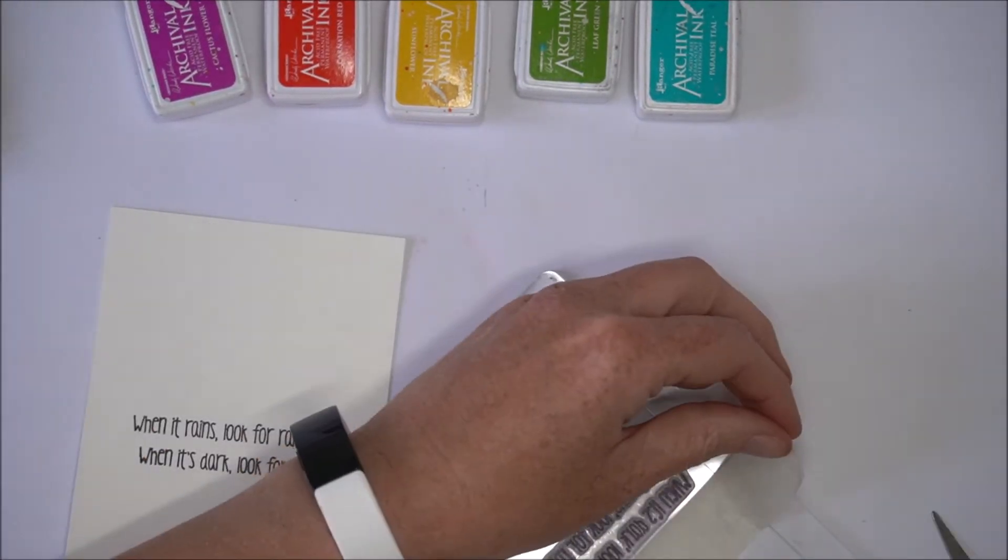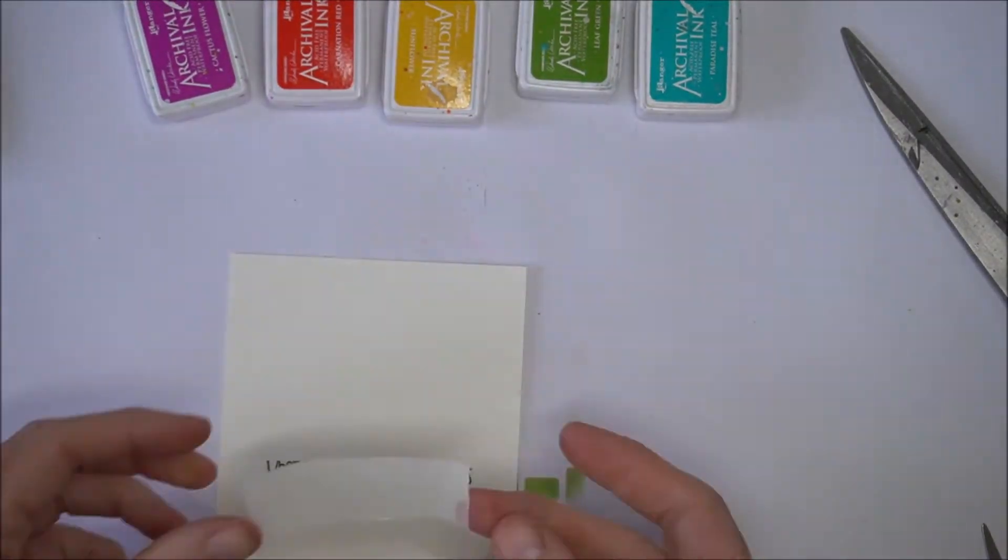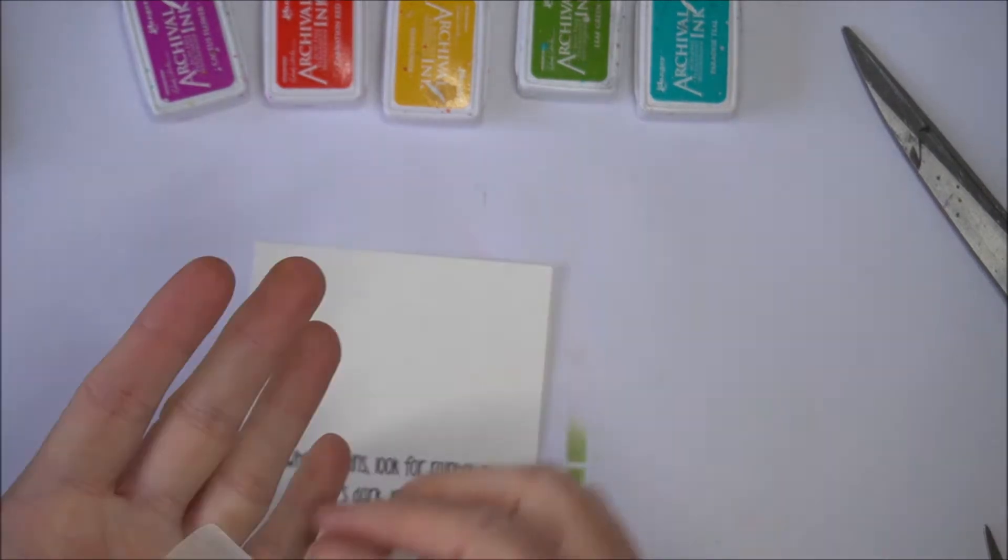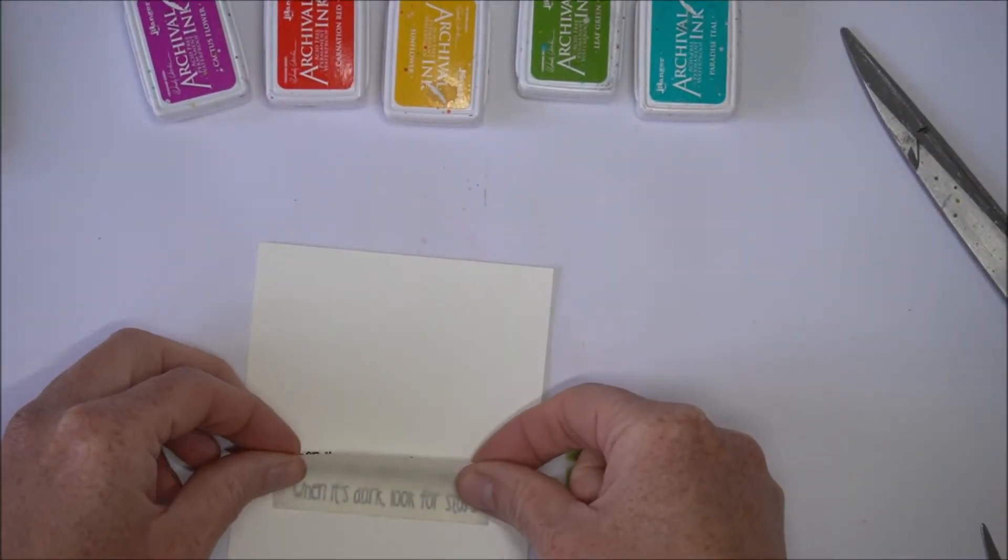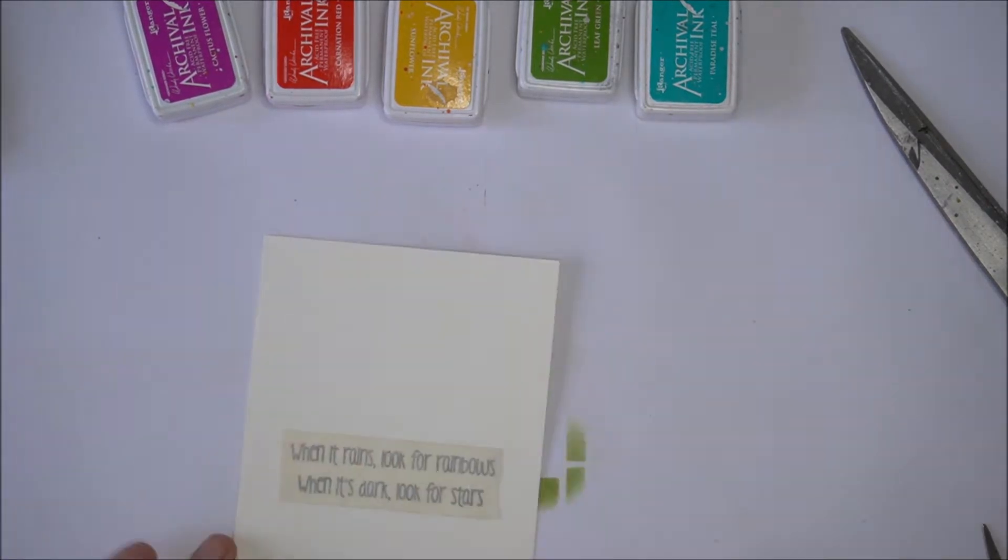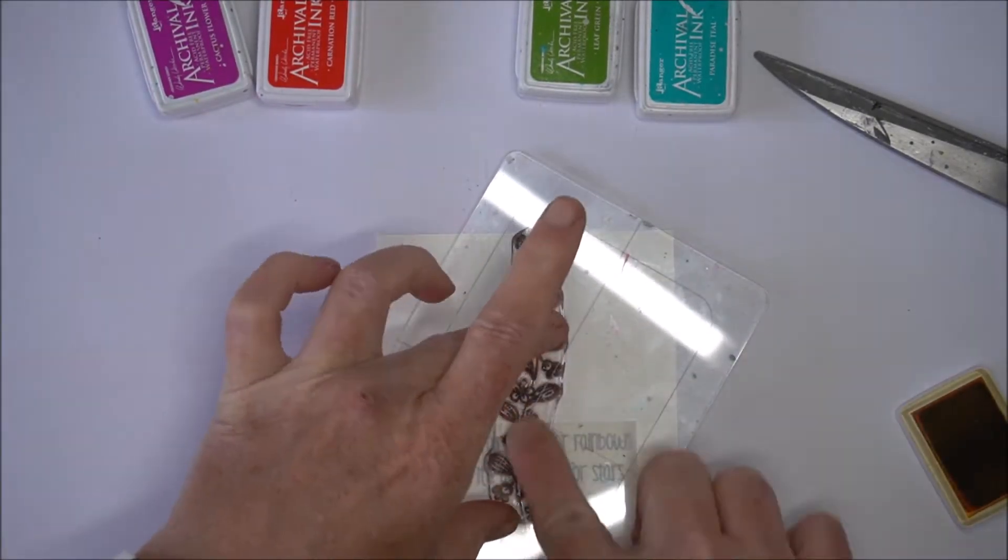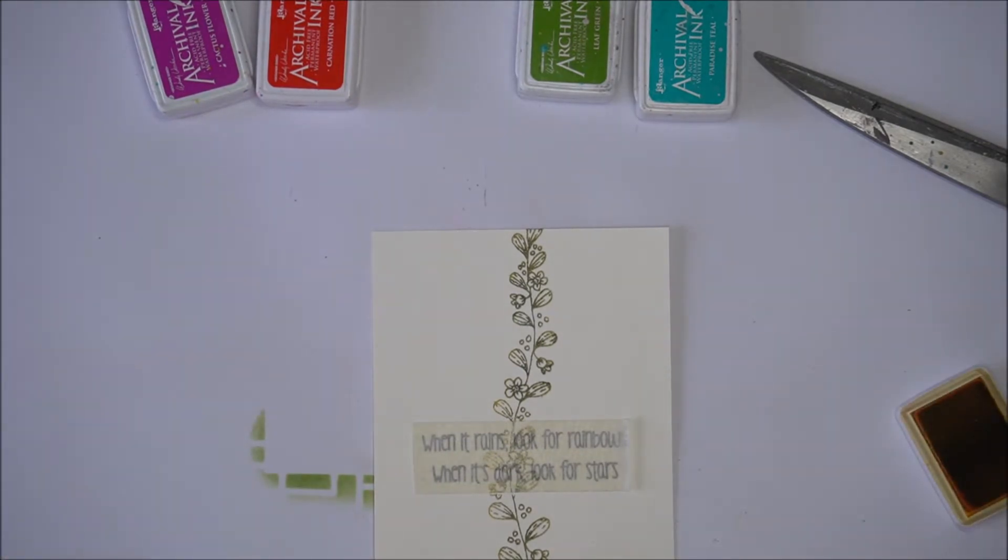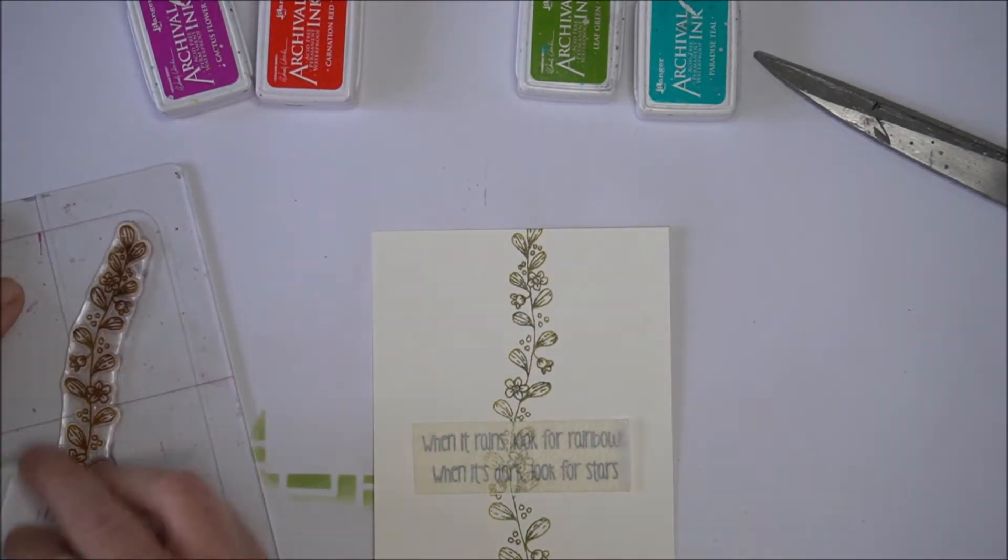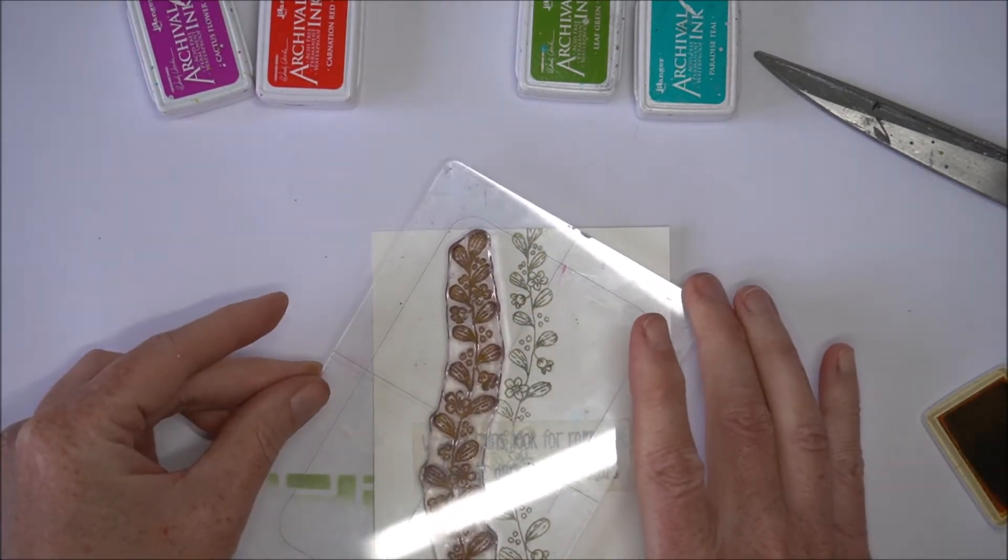Now I take a piece of masking tape and make it fit my sentiment. I make it a little less sticky and just mask off my sentiment, then I just stamp the design with different colors all over the card.